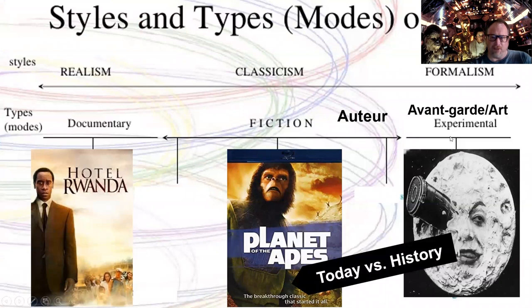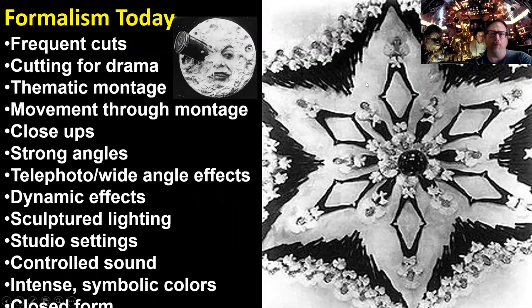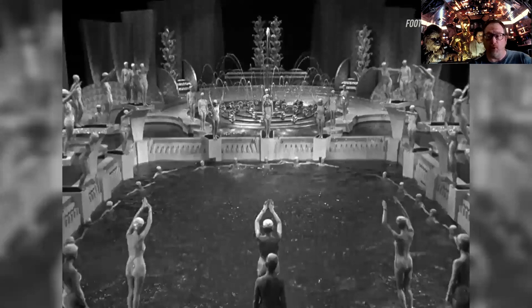Journey to the Moon was absolutely seen as formalist all the way out here on the spectrum. Today, though, if we were to move it over, it's just like Planet of the Apes — it really would be in the classical section. When we look at formalism, note the features: frequent cuts, cutting for drama, thematic montage, montage or movement through montage, close-ups, strong angles, dynamic effects. It literally becomes about motion and energy, particularly of different objects. By today's standard, that is what we would consider formalism.